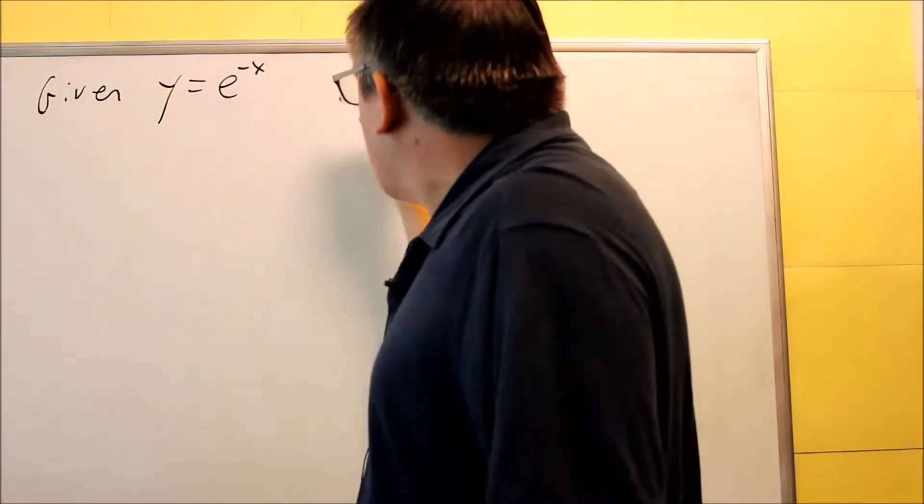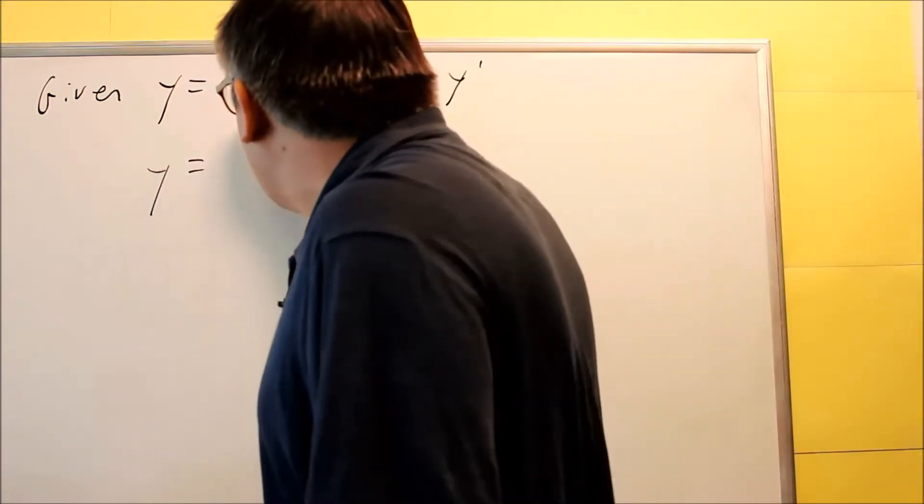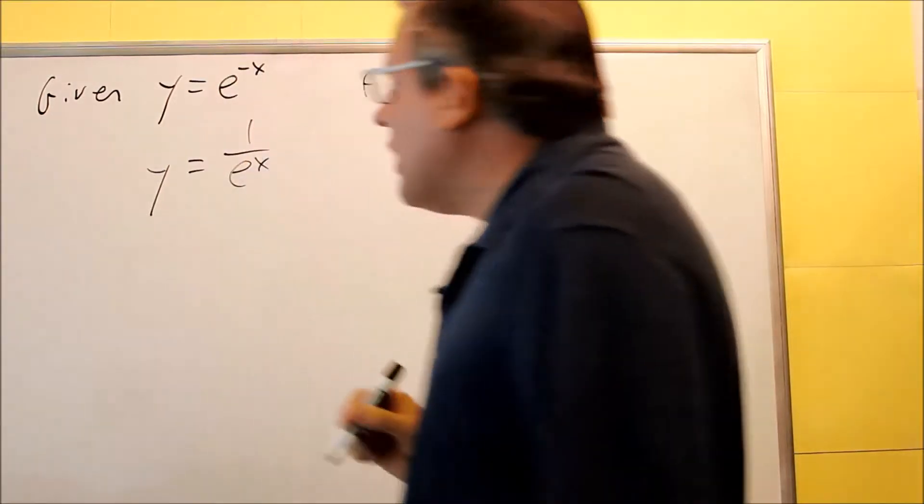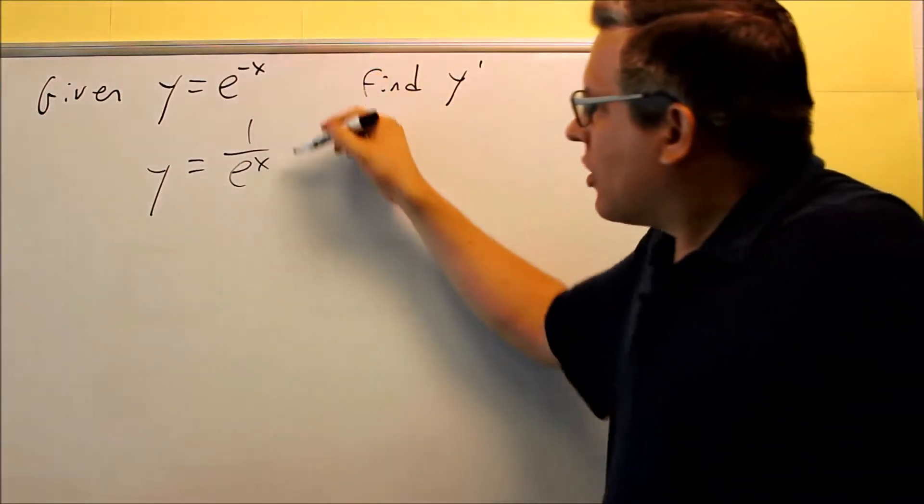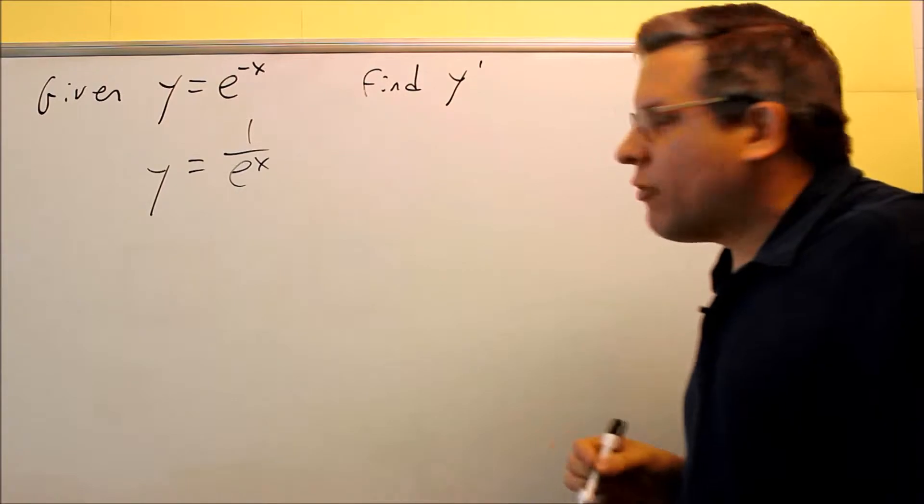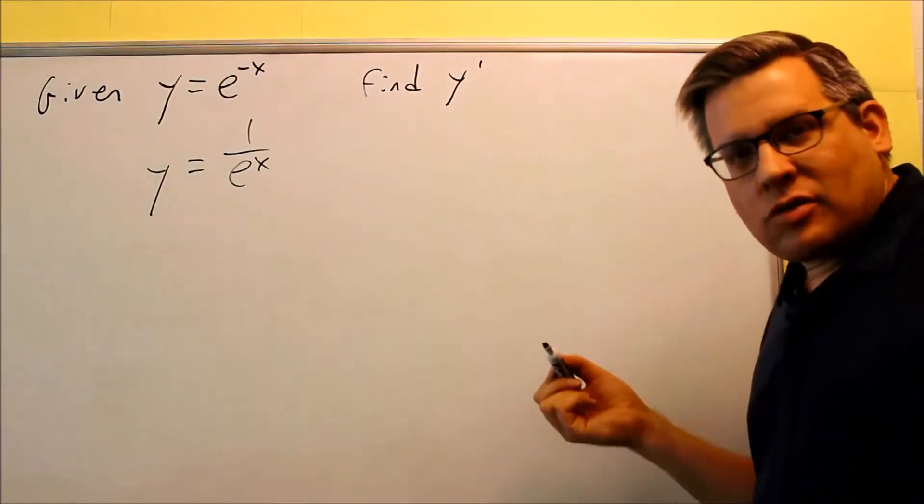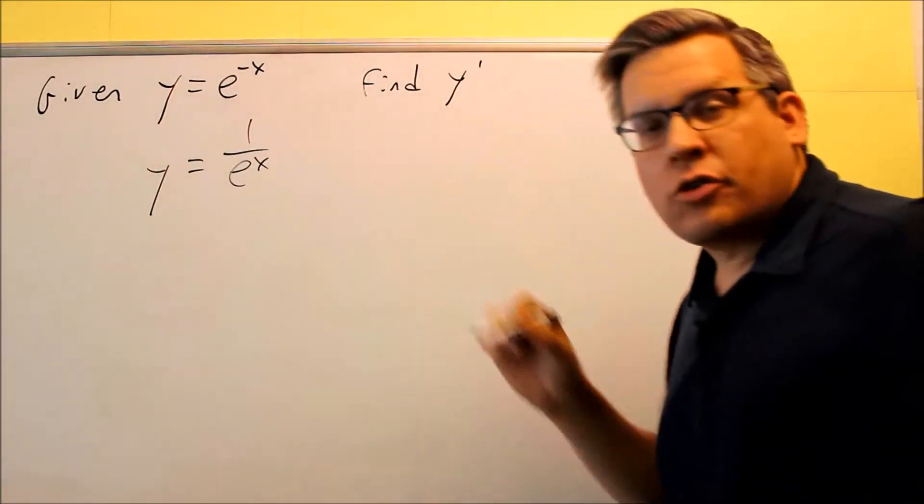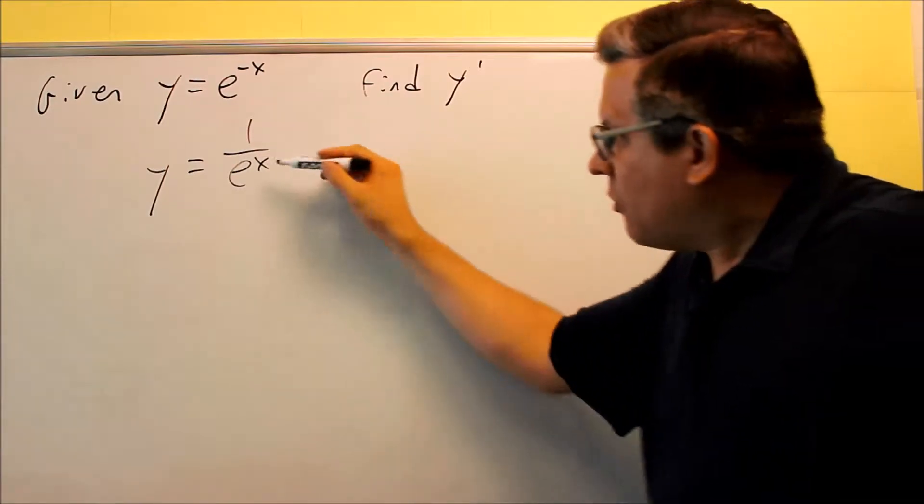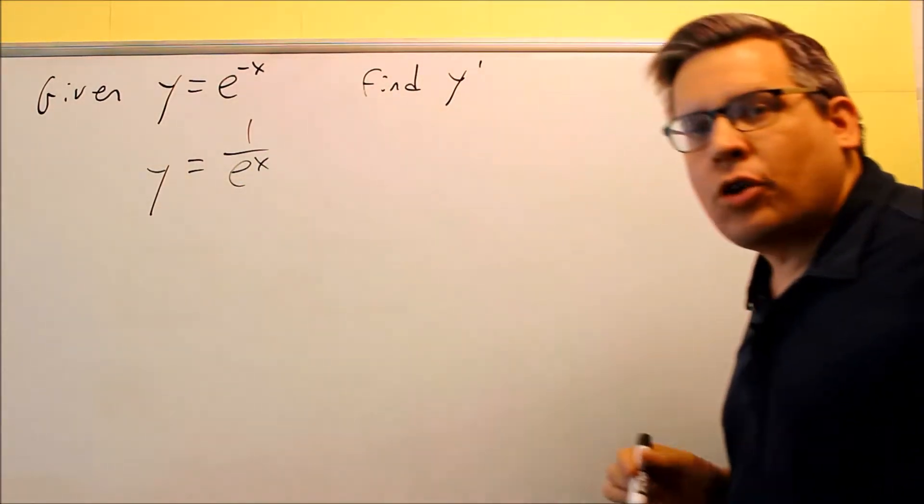So first, what we're going to do is we're going to rewrite this. So y equals 1 over e to the x. We want to put this on the bottom, and so that way we have a positive exponent, plus we only know how to do the derivative of the e to the x right now, so we want to create that. We can do that by putting that on the bottom.